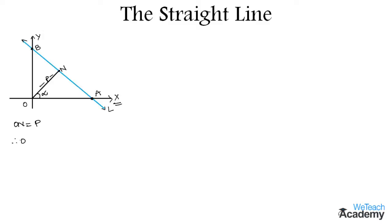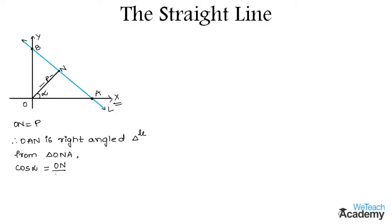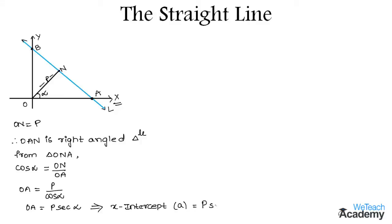Therefore we can say that OAN is a right angle triangle. So from triangle ONA, the value of cos alpha will be equal to the adjacent side ON divided by the hypotenuse OA. From this we can find OA equal to ON divided by cos alpha, that is P divided by cos alpha. So we can write OA is equal to P·sec alpha. Remember that OA is nothing but the x-intercept A of straight line L, which is equal to P·sec alpha.